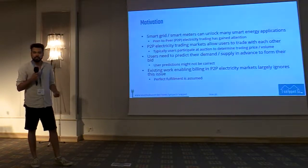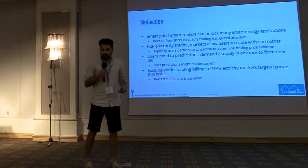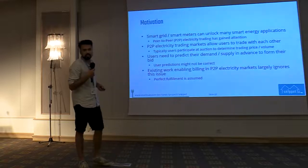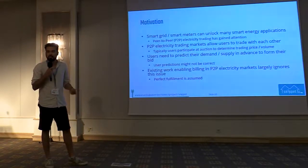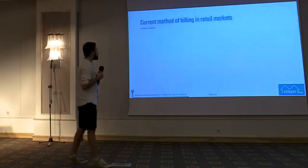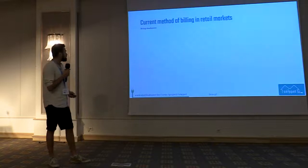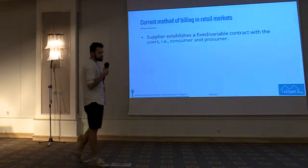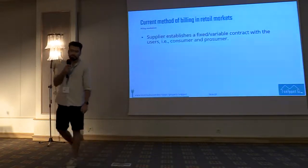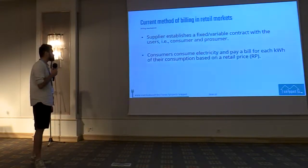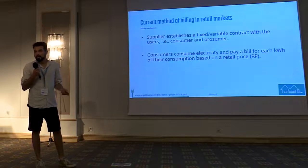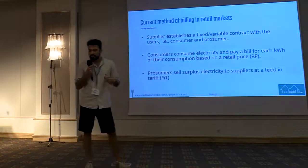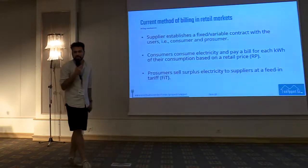In our research, we wanted to accommodate this deviation in new billing models in a way that penalizes users but also minimizes the penalty. The current billing mechanism involves suppliers establishing contracts with presumers or consumers — consumers pay for what they have consumed, and presumers get an incentive by injecting electricity to the grid at a feed-in tariff price.